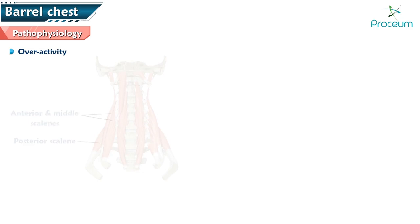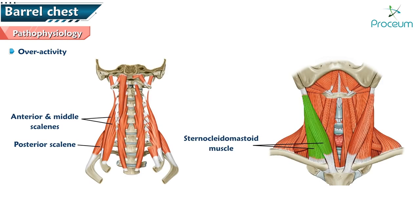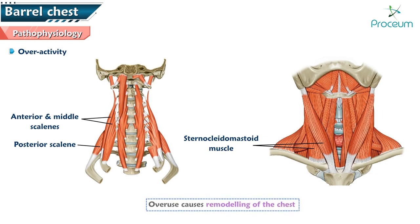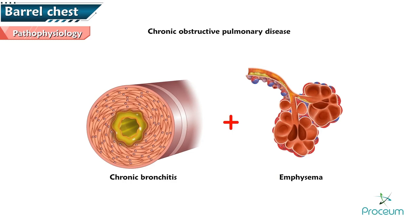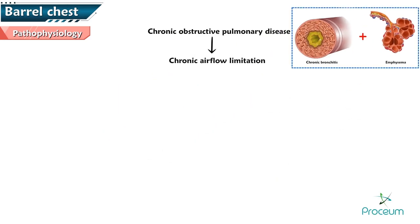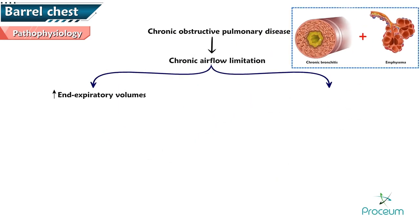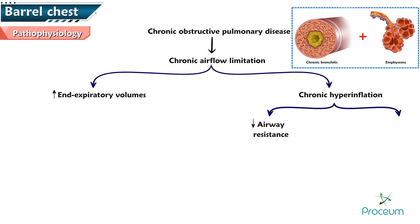Barrel chest occurs due to overactivity of the scalene and sternocleidomastoid muscles, which lift the upper ribs and sternum. Over time, this overuse causes remodeling of the chest. In chronic obstructive pulmonary disease, chronic airflow limitation results in increased expiratory volumes and chronic hyperinflation, which reduces airway resistance and improves elastic recoil at the expense of higher lung volumes.